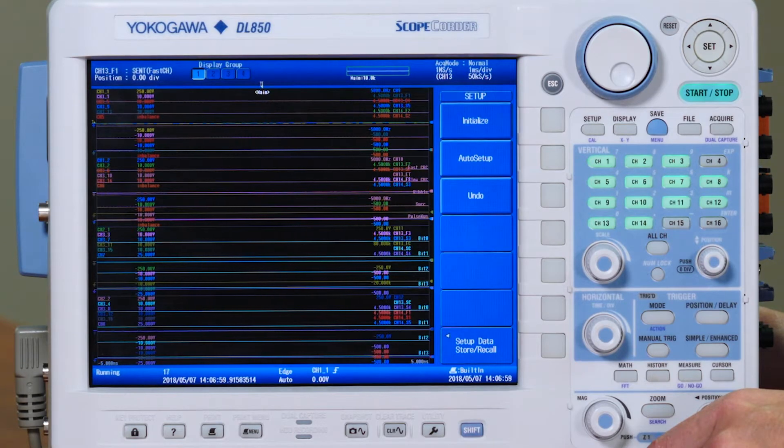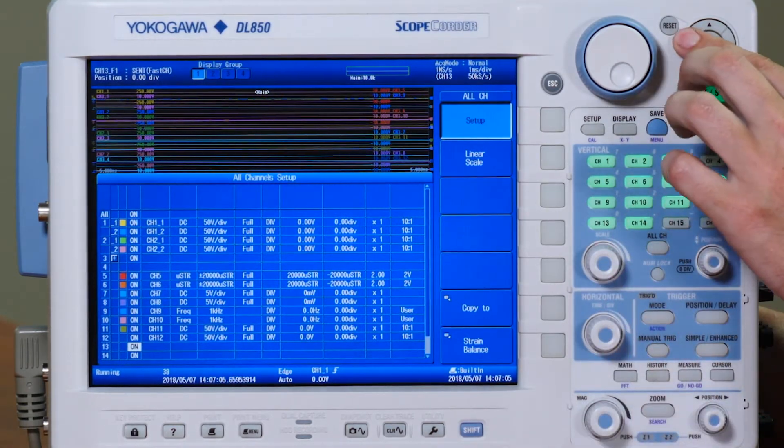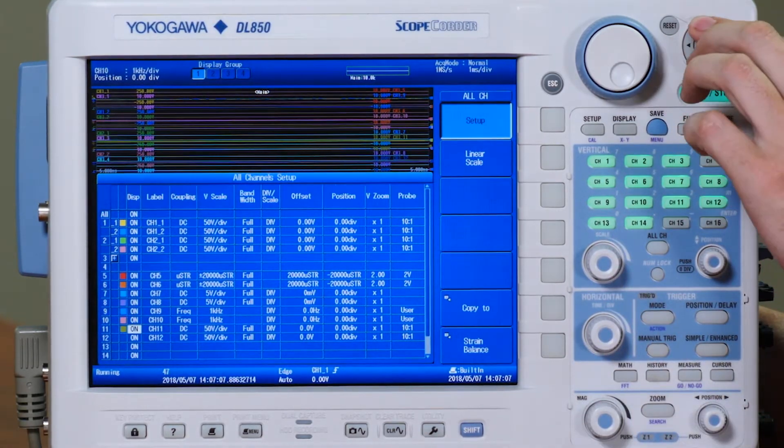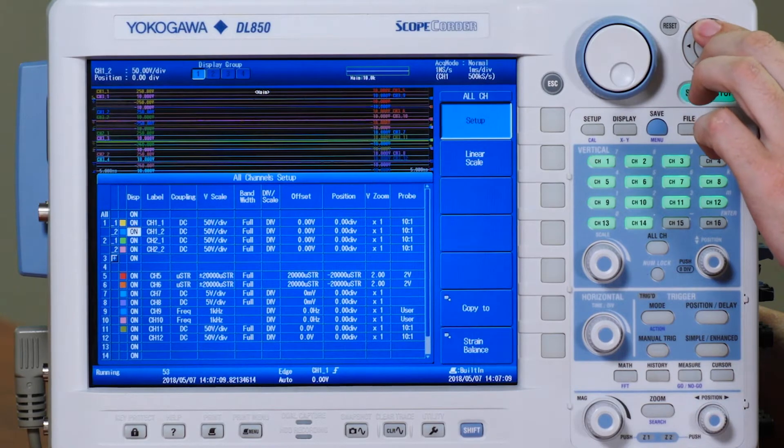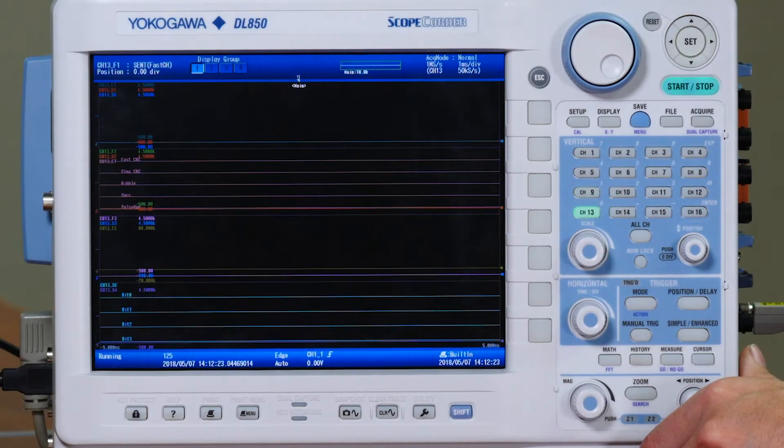Turn all the channels you do not wish to use off at this time. You can do this by pressing All Channel, scrolling over, and turning this off. I have selected to use Slot 7 for my SENT module. This will assign Channel 13 and 14 to this module. I am using Channel 13 to measure our SENT data, so I have chosen to turn all other channels off.